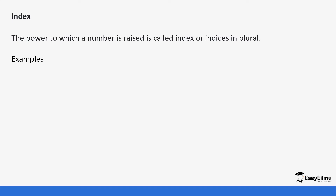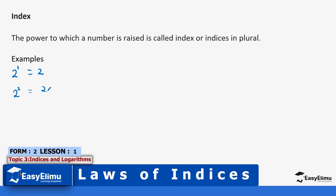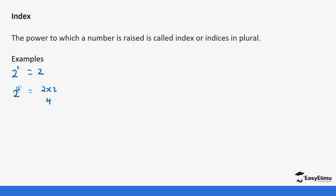An index is the number or power to which a certain number has been raised. For example, 2 to the power 1 gives us 2, so 1 is the index. 2 power 2 is 2 times 2, which gives us 4 — the index is 2. 2 power 3 is 2 times 2 times 2, giving 8, so 3 is the index. 2 power 4 equals 16, so 4 is the index. When we have many numbers raised to different values, we call those values indices.